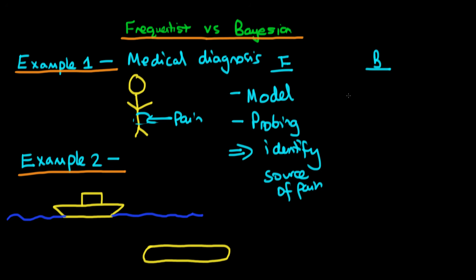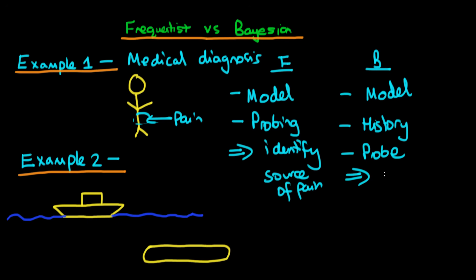How would this differ with the Bayesian situation? A Bayesian statistician would also have a model for identifying the causes of stomach pain, but the Bayesian doctor would also have to hand a history of the patient — for example, that this patient has had pain in their stomach in the past. They would probe and get feedback, use this as an input to the model, and also combine that with the prior history of the patient. It's this combination of the model results together with prior knowledge of the situation that helps identify the source of the pain.